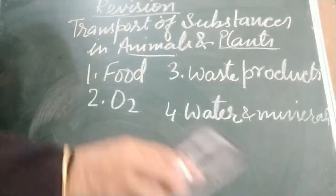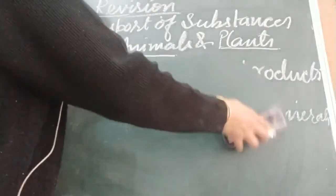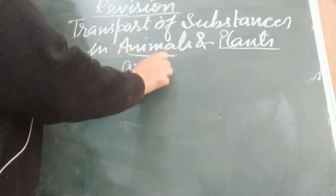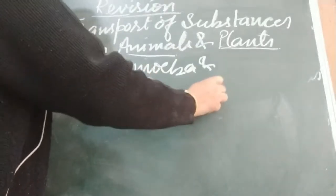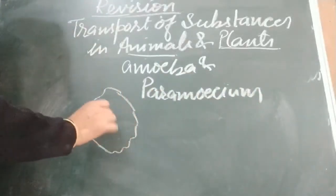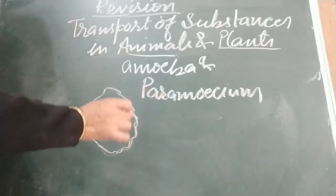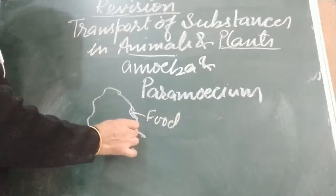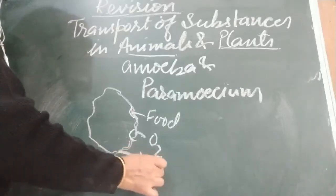First, we are going to discuss transport in animals. We will start with unicellular animals like amoeba and paramecium. In unicellular animals, there is no organ system. Directly through the semi-permeable membrane, all exchange of substances takes place. Food, oxygen — by the process of diffusion. Carbon dioxide also comes out by the process of diffusion.